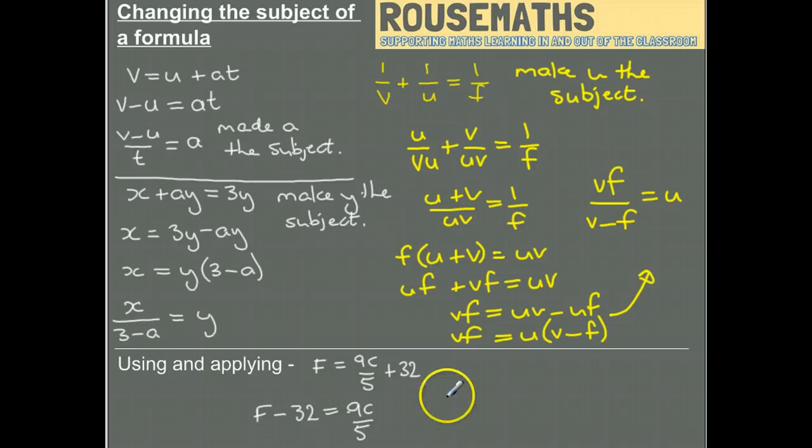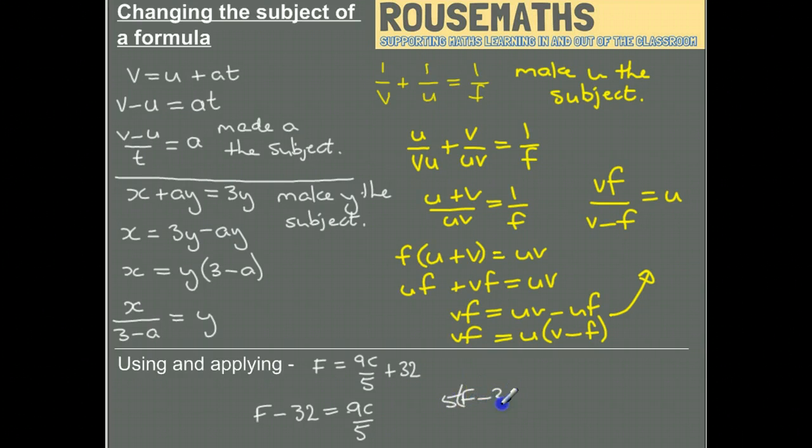And then divide everything by nine. And that gives you a formula where you can now convert Fahrenheit to Celsius.